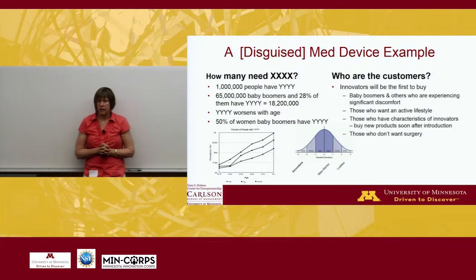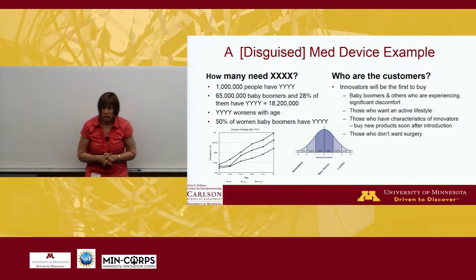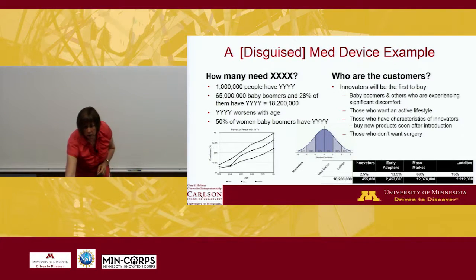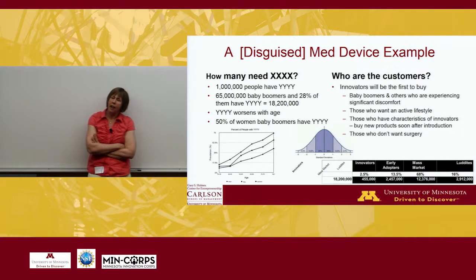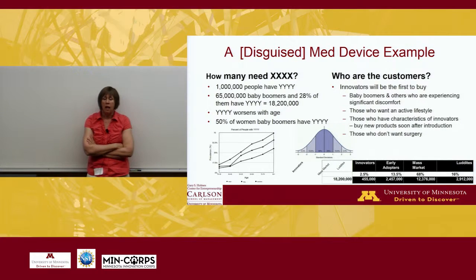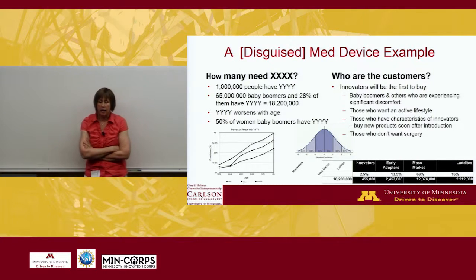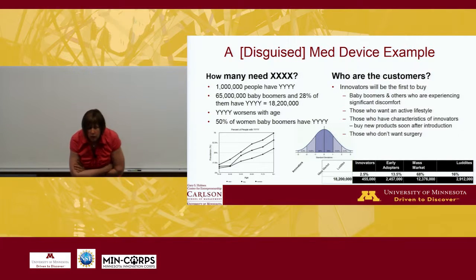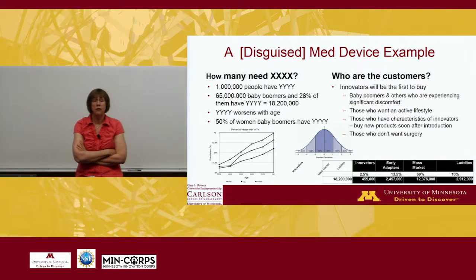So what these guys did was say, 'Those are our market segments.' Therefore, you've got a whole bunch of people that have this condition. Our first segment will be the innovators among baby boomers who have this condition, and our second segment will be the early adopters. Between the two, that's about 3 million people, and we're going to charge 50 bucks a pop — so there's a $150 million market.